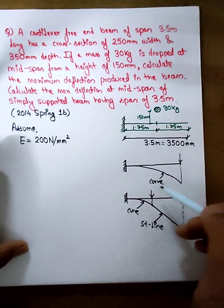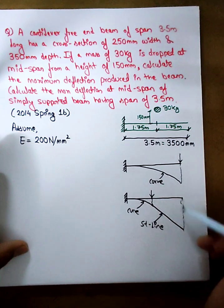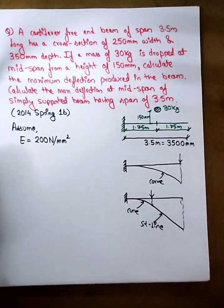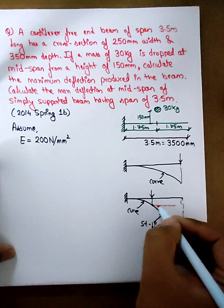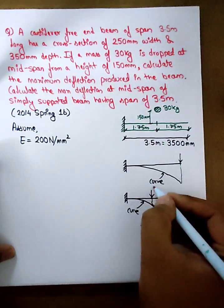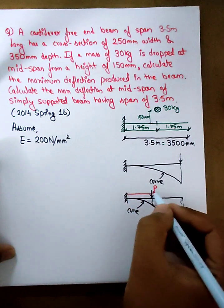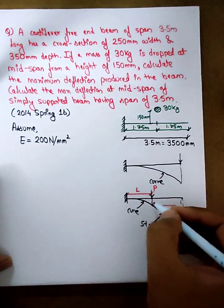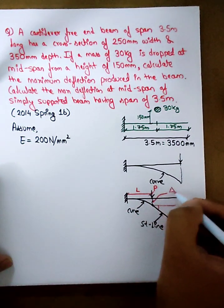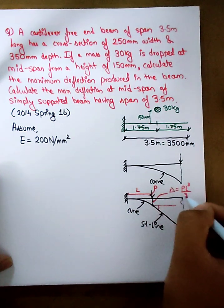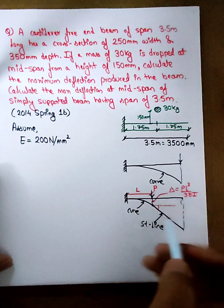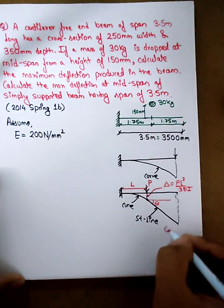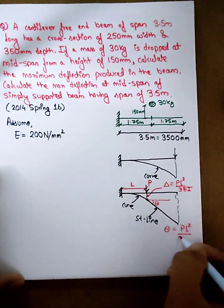The impact of the 30 kg load causes maximum deflection. For a cantilever beam with point load P at the free end, the deflection formula is PL³ by 3EI. The slope or angle at the loaded point relates to the deflection over the length.